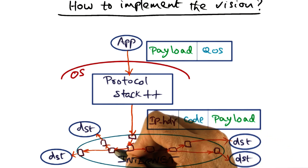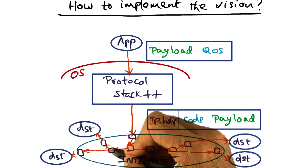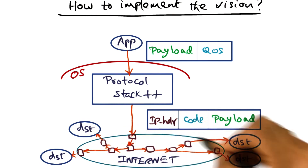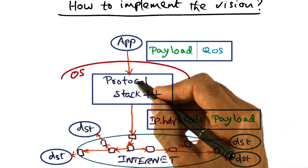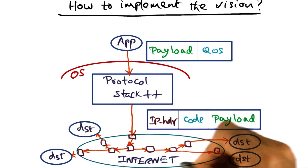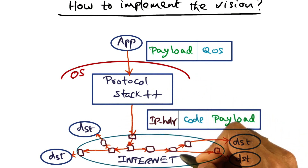Similarly, when it comes over here, this router may say: this particular packet has to go to multiple destinations, and so on. And that way we can see that intelligent routing decisions can be taken in the network.